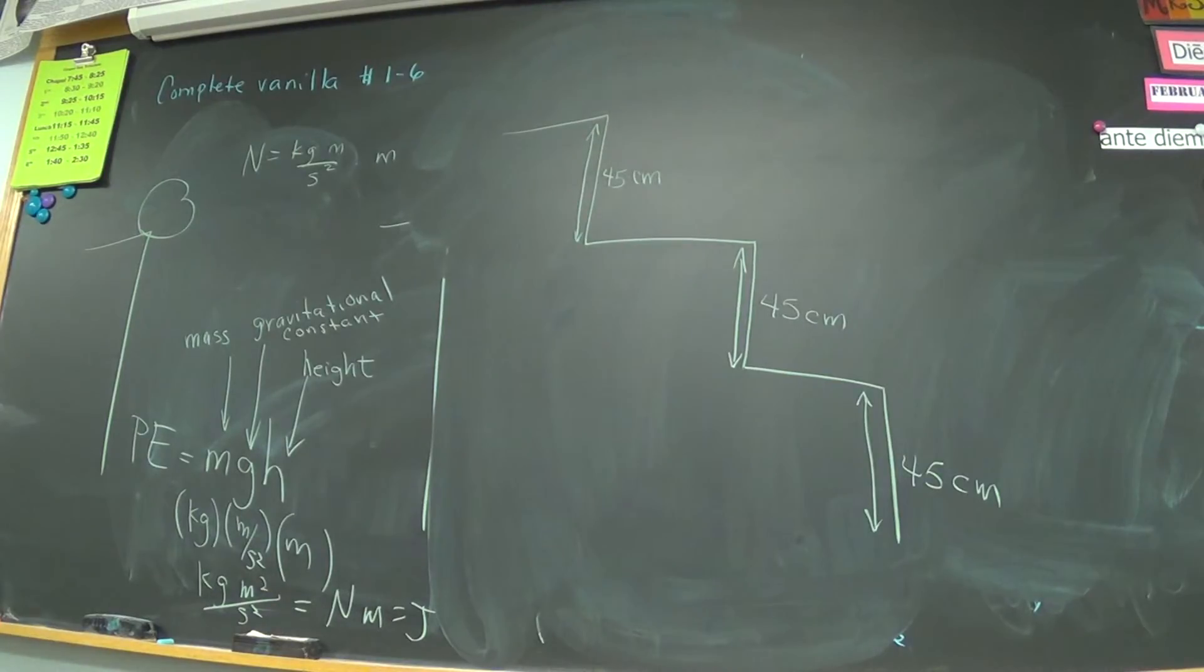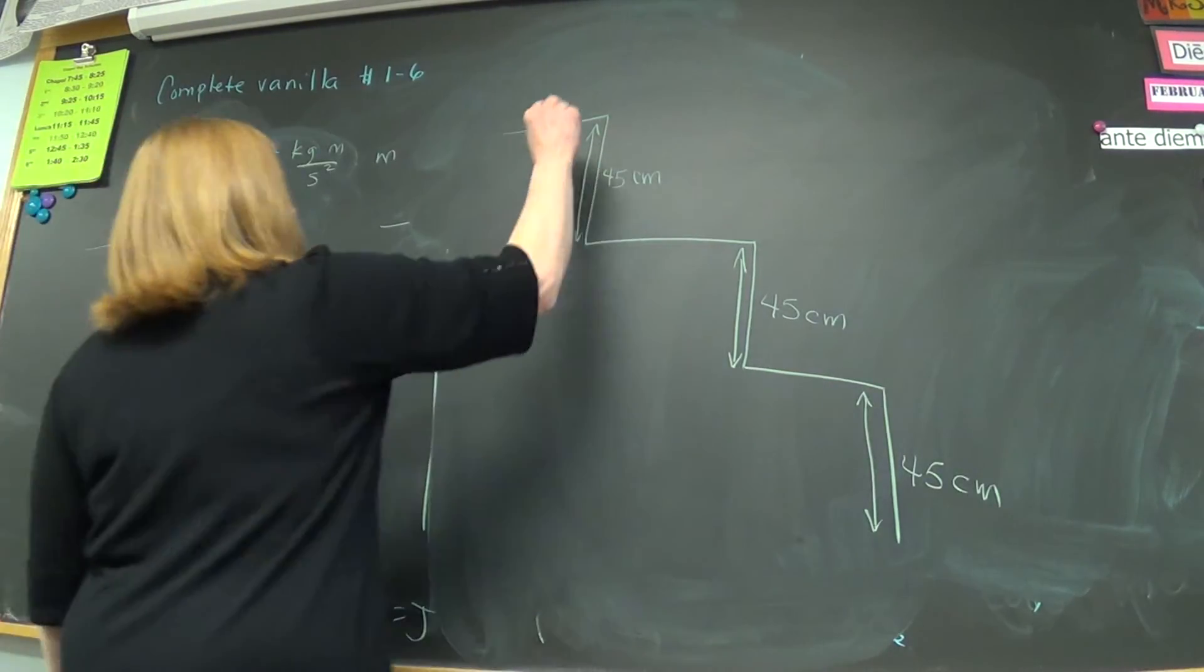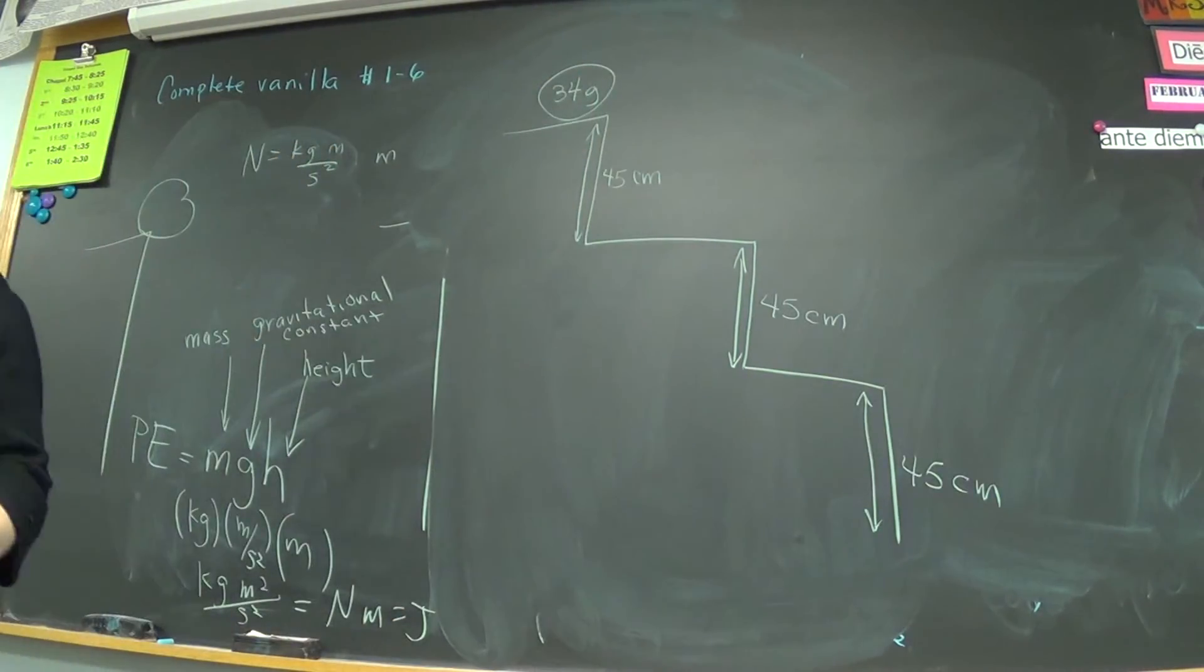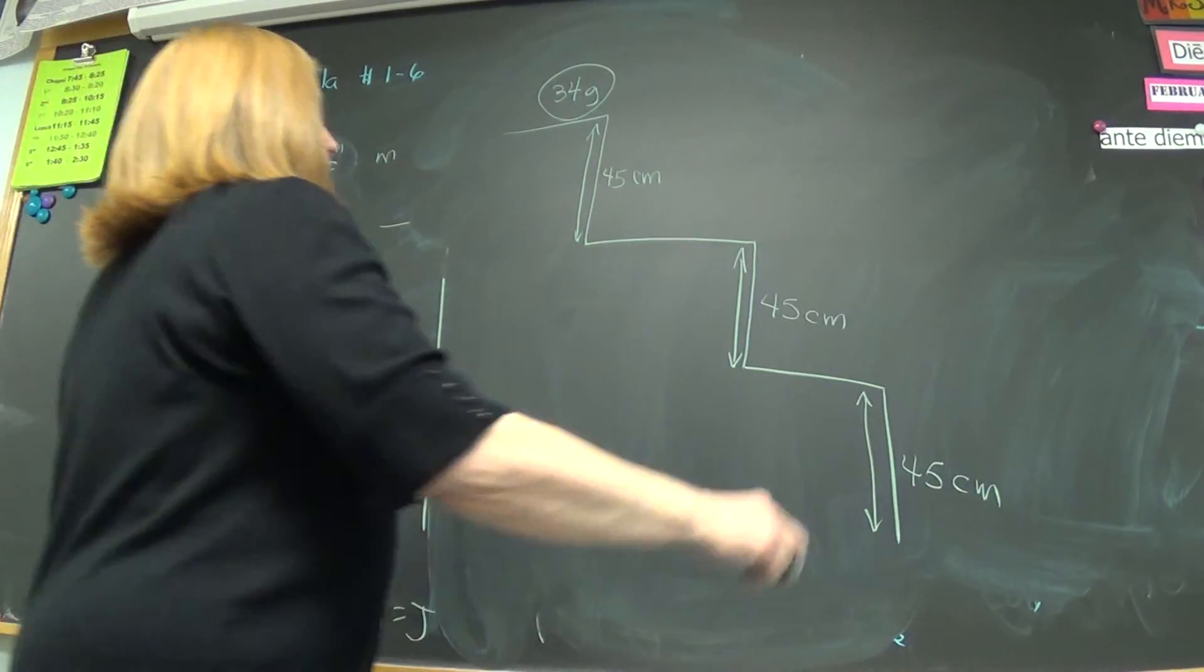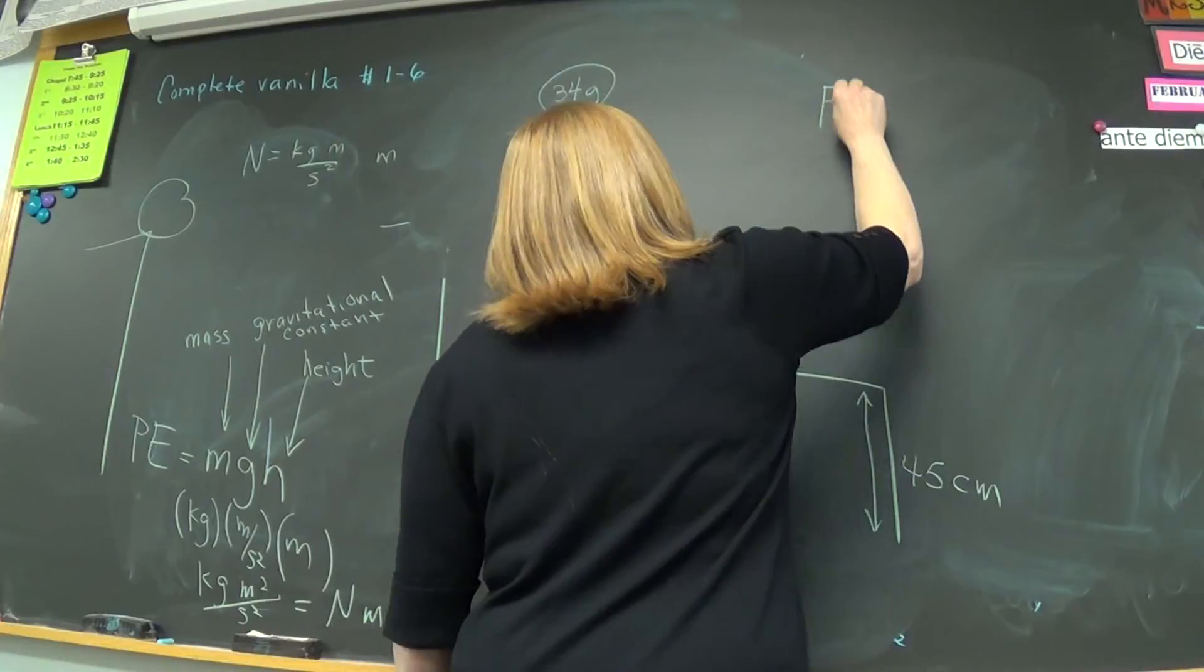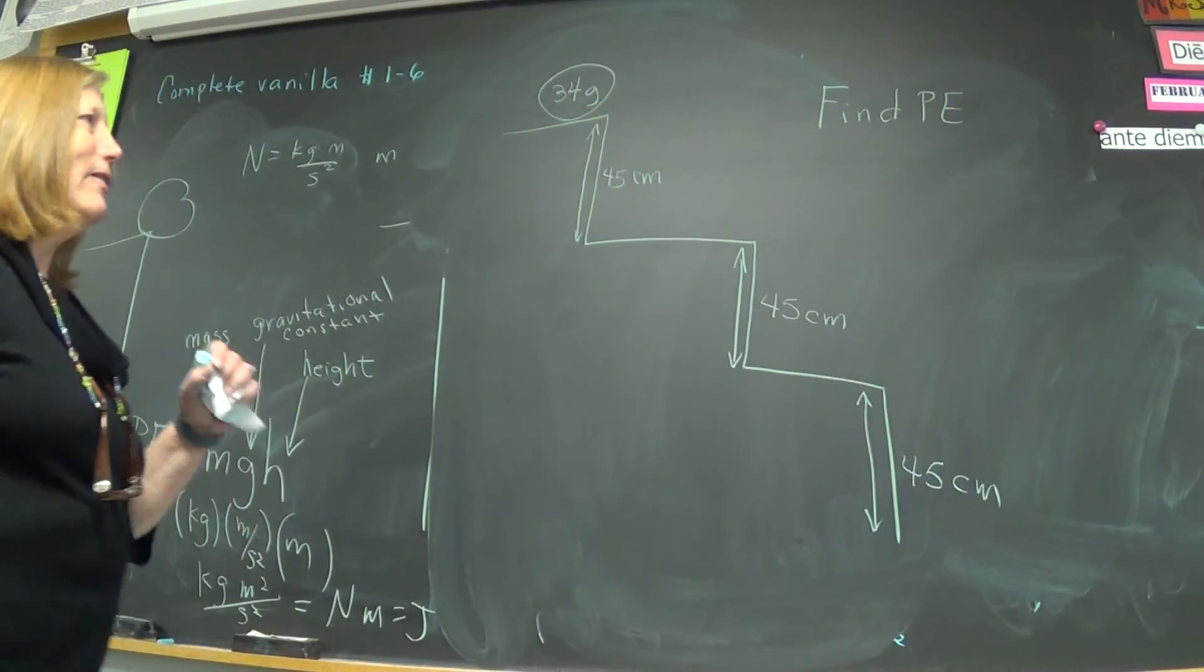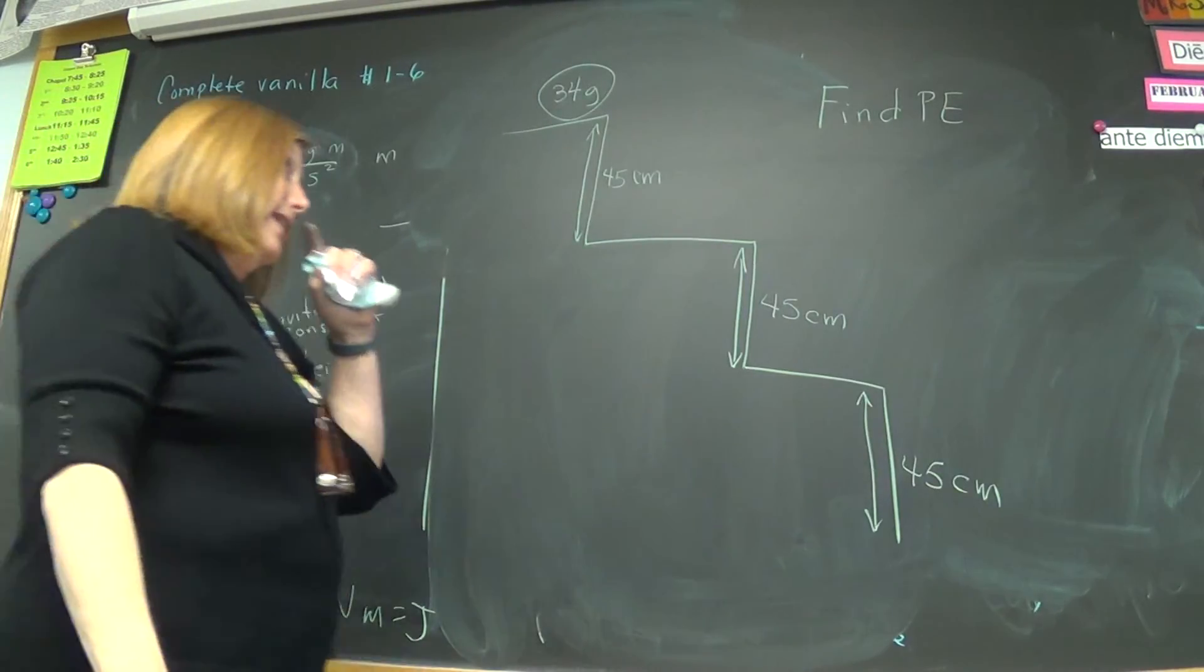I have a 34 kilogram ball. I mean, gram, 34 gram. So, it's small. So, I want to find the potential energy at each step. So, think of this problem, Morgan, when you walk into your house or down. Find PE at each step.